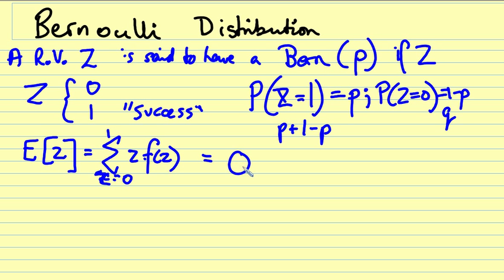So Z can take on the values zero with probability q, and it can take on the value one with probability p. So the expected value of a binary random variable with parameter p is p.